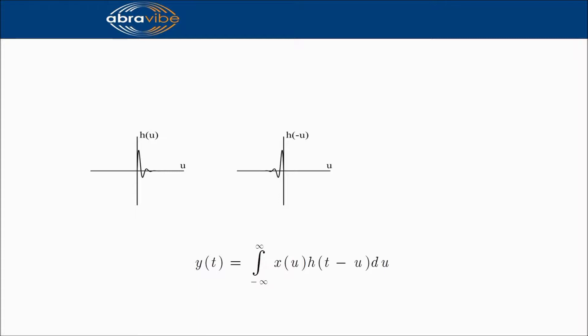The next step is to explain h of t minus u, which is the same as h of minus u plus t. This is obviously a shift of h of minus u along the x-axis. If t is larger than 0, then it is a shift to the right, as illustrated here.